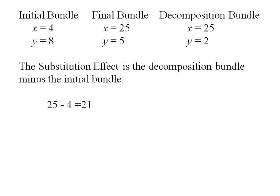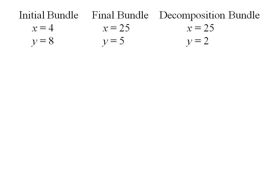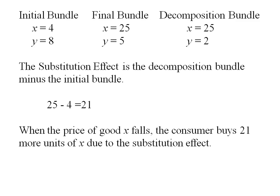So my final bundle has 25 units of x. My initial bundle has 4 units of x, giving me a substitution effect of 21 units. When the price of good x falls, the consumer buys 21 more units of x due to the substitution effect.